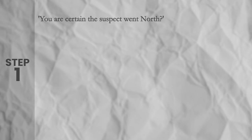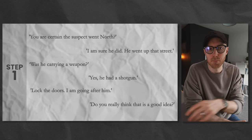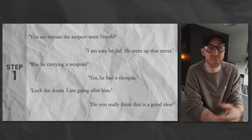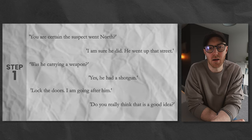So here it is at step one. 'You are certain the suspect went north?' 'I am sure he did, he went up that street.' 'Was he carrying a weapon?' 'Yes, he had a shotgun.' 'Lock the doors, I'm going after him.' 'Do you really think that is a good idea?' I know it seems wooden and stiff, but I do see this kind of formal dialogue fairly often in my editing work. Grammatically it's fine — it's clear, it moves the story along, it's functional. But does it actually mimic a real conversation? Does it make us believe these are two people talking? I don't think it does.